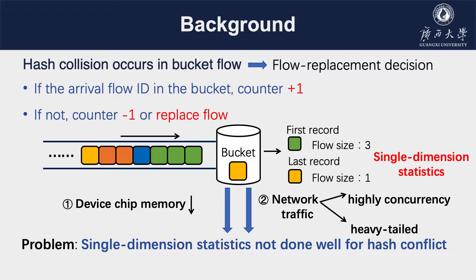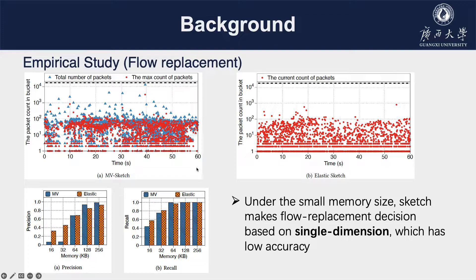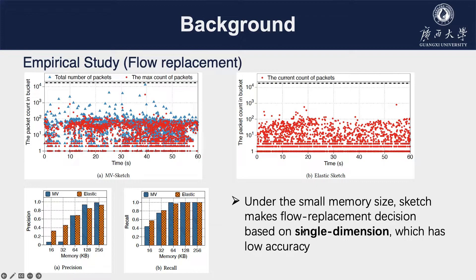To confirm this problem, we did an empirical study. We randomly selected 10 heavy hitters missed by NV Sketch and Elastic Sketch. We can see that real heavy hitters are often replaced when the counter value in the bucket is small. This result indicates that under a large number of small flows, it is hard for the packet count of missed heavy flows to grow large. NV Sketch and Elastic Sketch have lower accuracy in small memory. Since sketch-based approaches make flow replacement decisions only according to packet count, some large flows may be overwhelmed by the mass number of small flows under limited memory, resulting in loss of detection accuracy.